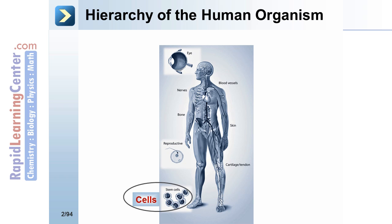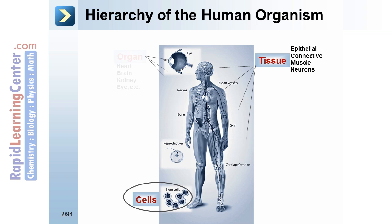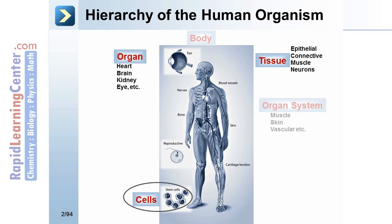Stem cells, epithelial, connective, muscle, and neurons make up tissue types. Organs such as the heart, brain, kidney, and eye, and organ systems such as the muscular system, skin, and vascular system compose the body.